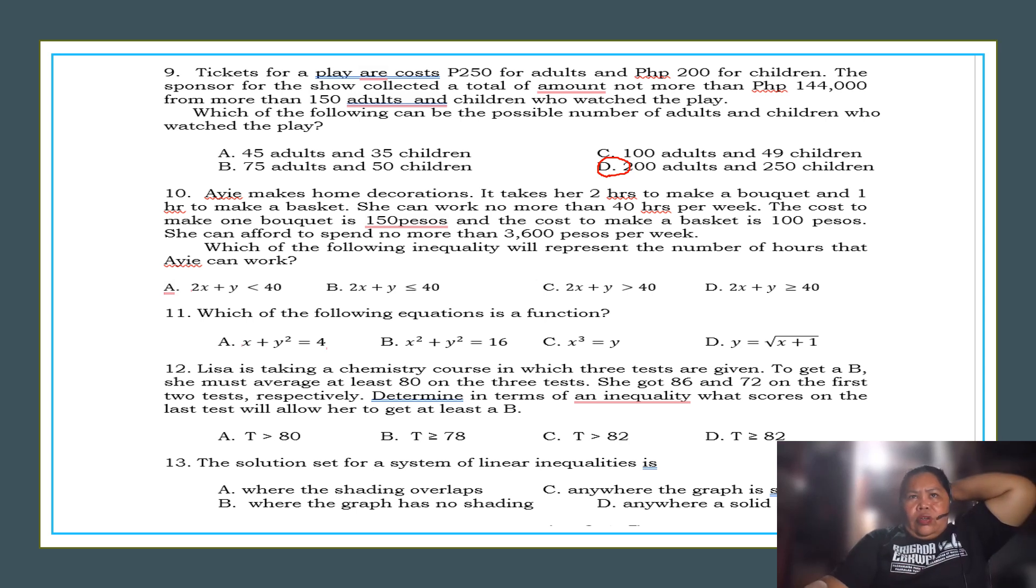From here, you can analyze that for 250 and 200, of course, there are 200 adults and 250 children. From more than 150 adults, of course, you can divide this one. 250, 200.